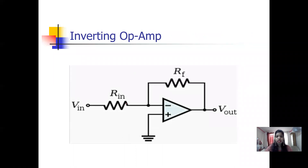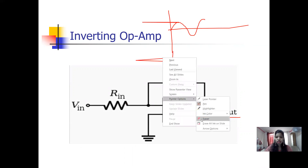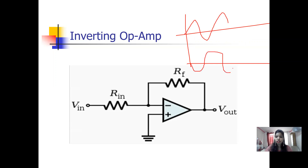This is the circuit diagram of the inverting op-amp. In the theory lecture you can get a detailed explanation, but for now understand that the output is 180 degrees out of phase with the input. If the input is a certain waveform, the output will be 180 degrees out of phase — so if input is in this form, the output will be just the opposite.